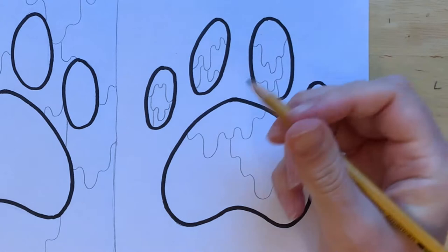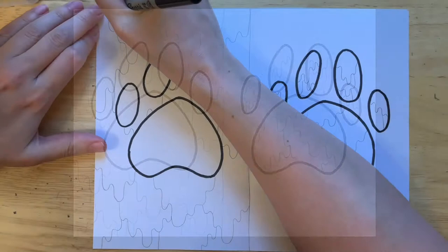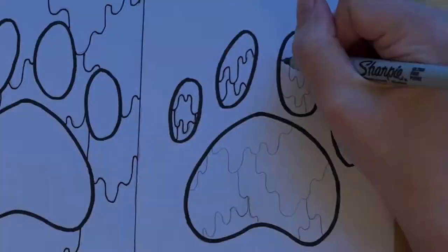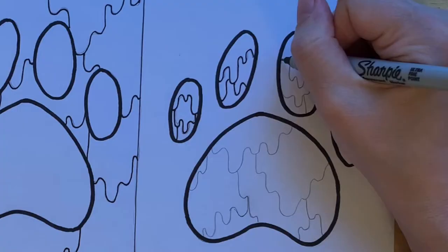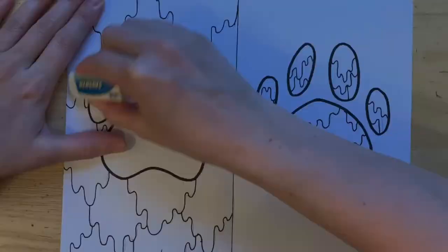Using a black sharpie marker, please trace your drip pattern. By outlining your entire design with sharpie marker, it really makes everything pop. Clean up the image with an eraser as needed.